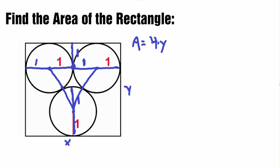Now we have a triangle, and if we cut that triangle in half we can have two right triangles — colored in red to make it easier to see. We have this right triangle, and the height of the right triangle goes along our y value. So if we find this height, we can add it to the known value of 1 and this known value of 1 to get our y value.